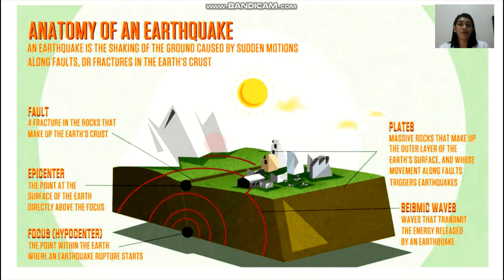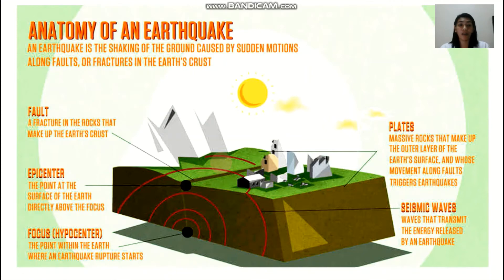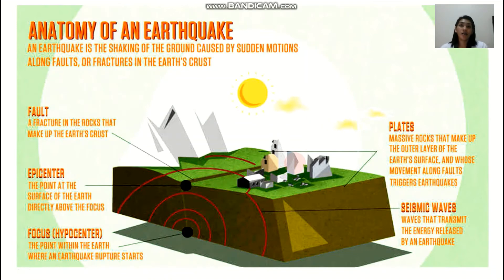The epicenter is what we usually hear in news reports — you would hear that the epicenter is at a specific location. We also have the tectonic plates, which are the massive rocks that make up the outer layer of the Earth's surface — these are the ones moving during an earthquake. And lastly, you have the fault, which is a fracture in the rocks that make up the Earth's crust. The Philippines is located at the Ring of Fire, so we have many fault lines.